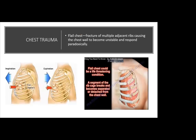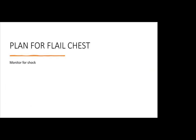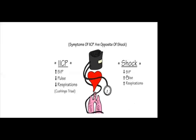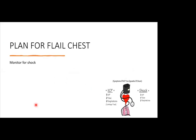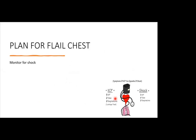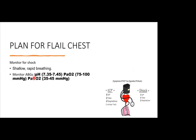Management of flail chest includes monitoring for shock — BP down, pulse and respiration up. Note that increased intracranial pressure is the opposite: BP up, pulse and respiration down. Monitor for shallow, rapid breathing or tachypnea. Monitor arterial blood gas levels and assess for metabolic or respiratory acidosis.